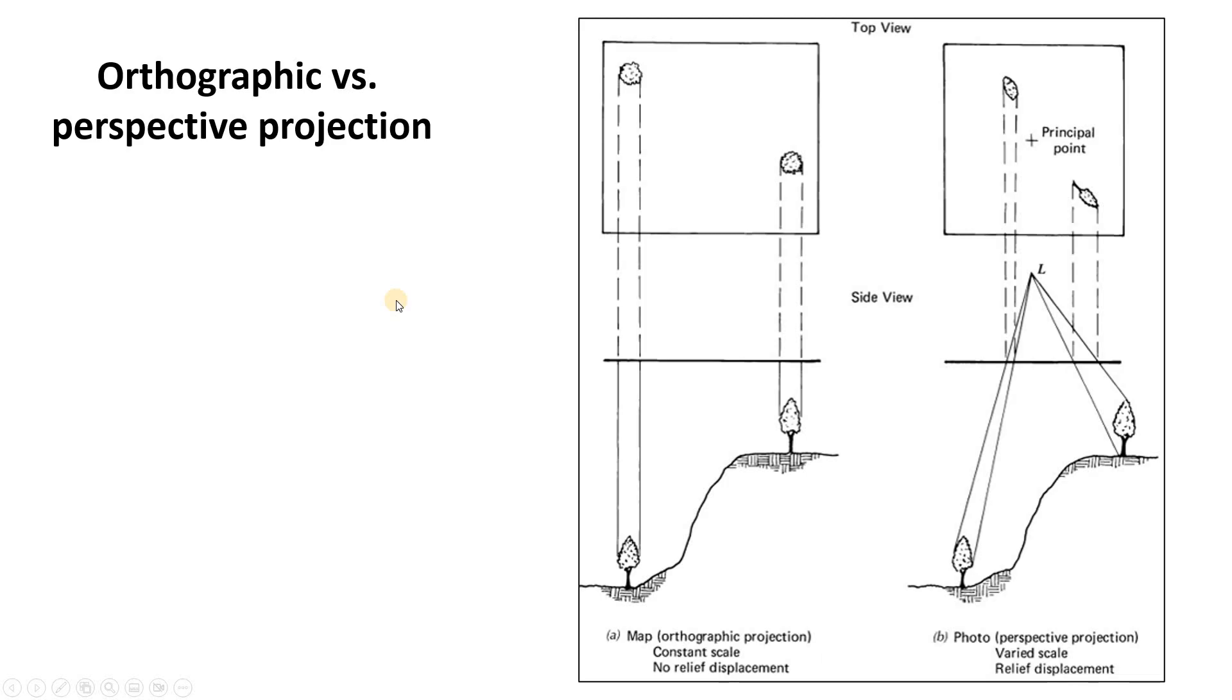Now by definition if it's a map it has a constant scale across the map and one common map projection would be called an orthographic projection. This has a constant scale. Here's an example of that. Imagine this is your map box up here, this square, and you're looking down on earth's surface. Every object or pixel on earth's surface projects upward into its exact extent as if you were kind of just dropping a blanket down onto the surface and so that gives us a constant scale. In contrast images are typically collected in what's called a perspective projection.